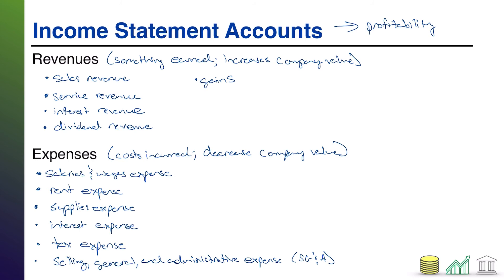A couple of special expenses worth pointing out: one is depreciation expense. I'm calling this out because it has an associated account that is not an income statement account — it shows up on the balance sheet and is called accumulated depreciation. So depreciation shows up in two places: on the income statement as depreciation expense, and on the balance sheet. Don't mix them up. Depreciation expense is the income statement account and relates to how equipment, buildings, and other fixed assets get expensed over time.